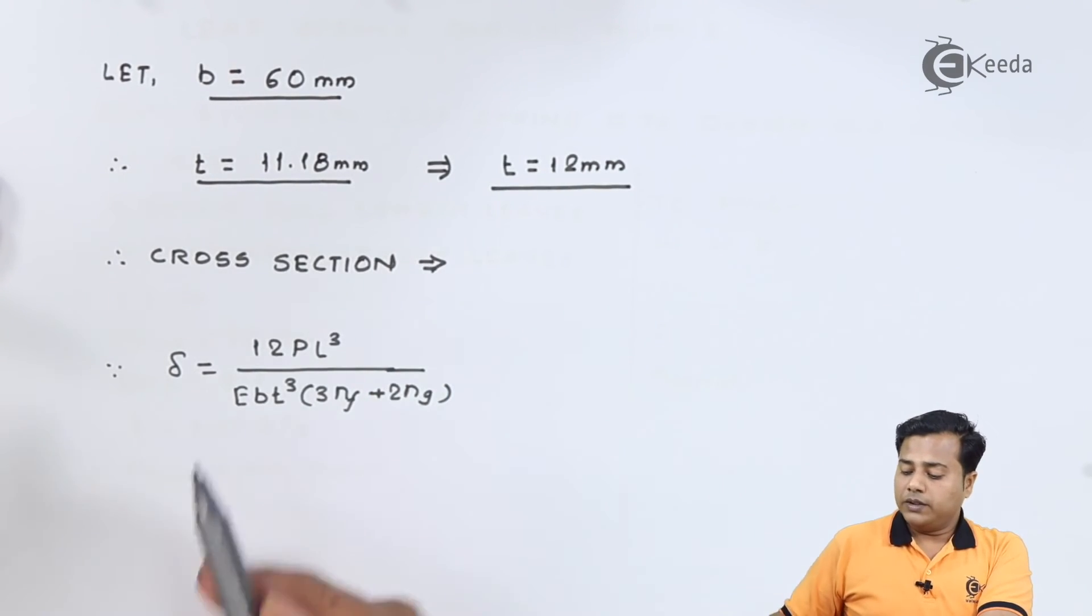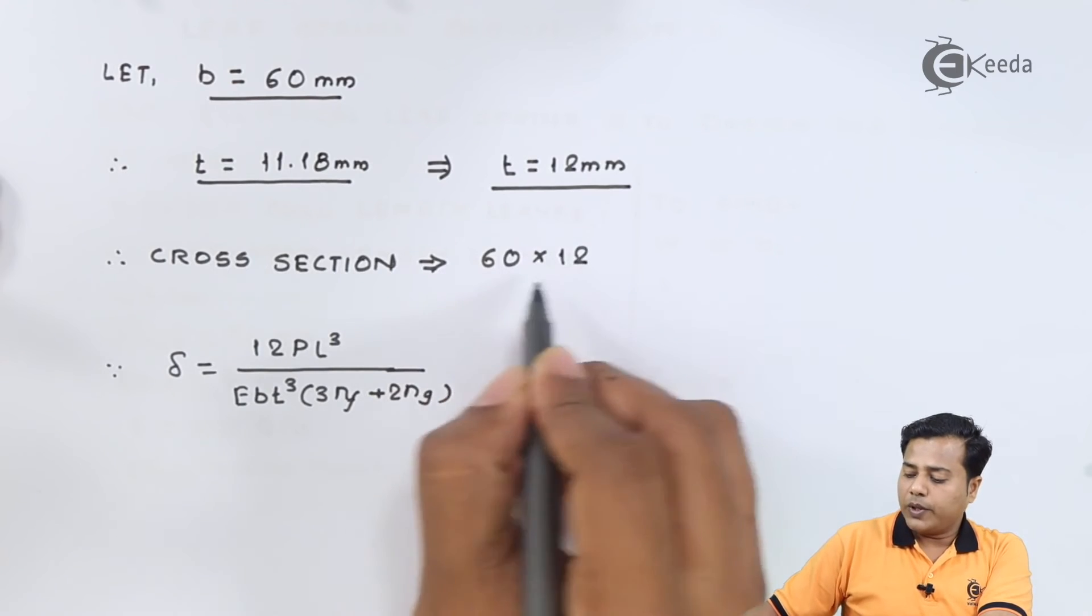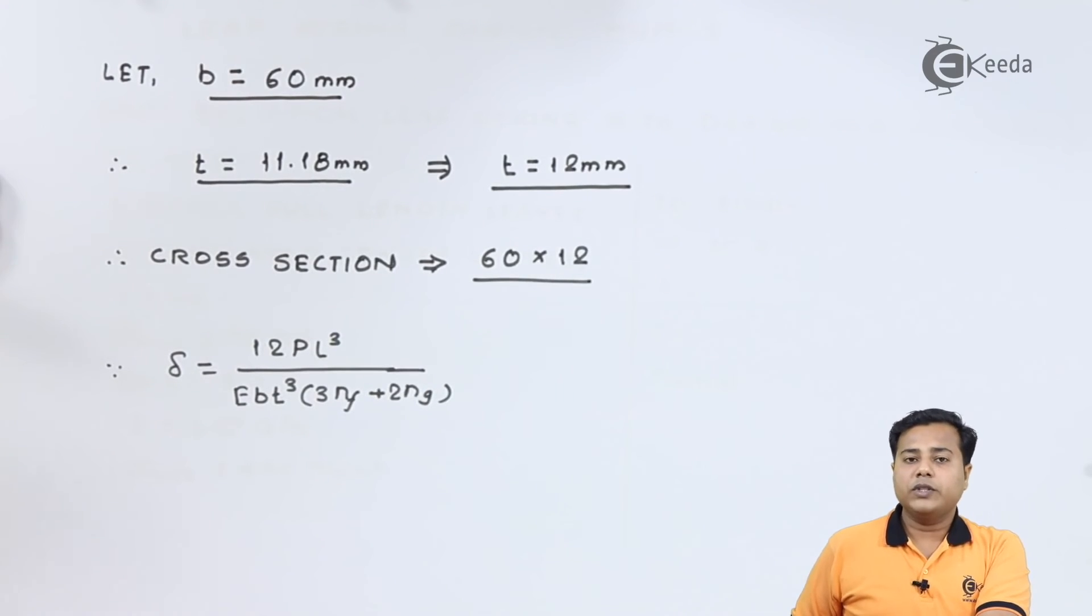Here further cross section will be width 60 by thickness 12 because the length factor does not come into picture because the leaves are of different lengths.